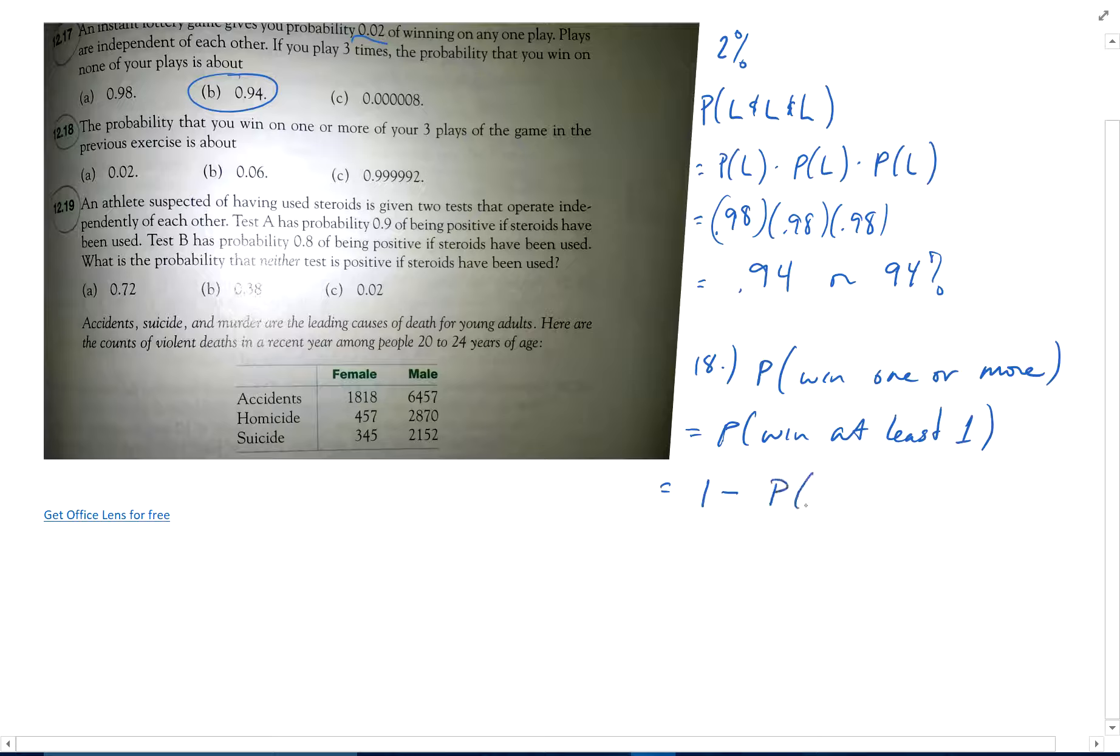And that is one minus the probability of winning zero times. So this goes back to this idea right here. The probability of winning zero times plus the probability of winning at least one time must be one. This concept here, because we've exhausted all possibilities, you either win zero times or you win at least once. That has to be one.